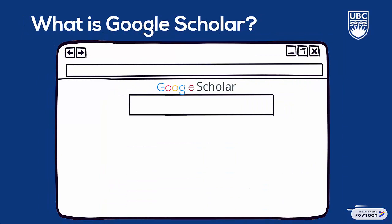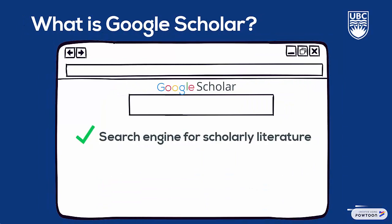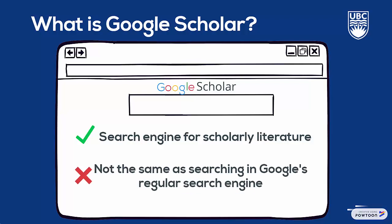Google Scholar is Google's search engine for scholarly literature. Even though Google is in the name, it's not the same as Google. What you'll find here is scholarly work that you can use in your research, in the same way you would use research that you find in Summon or subject databases from UBC.